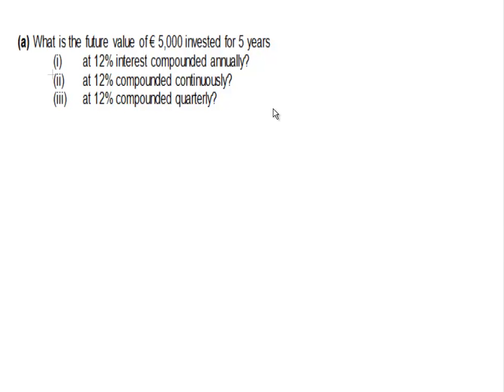So, the present value, P0, we'll write as P0, and that is equal to 5,000. The period in years is t, and that is equal to 5 years. And the interest rate in each of the three questions, i, is equal to 0.12.